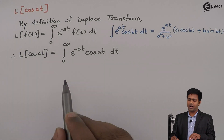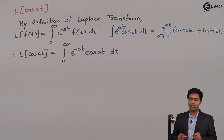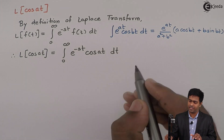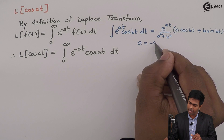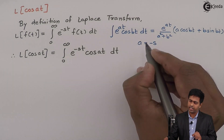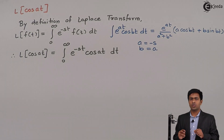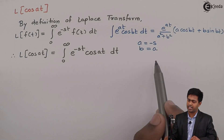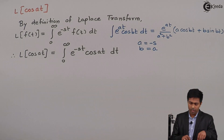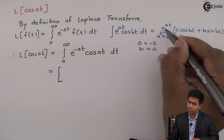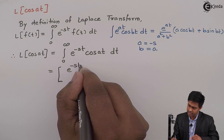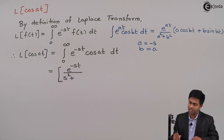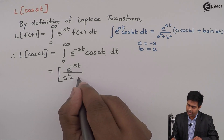Now let us compare our term with the formula. We can see that e raised to AT corresponds to e raised to minus st, which means a equals minus s. And since cos(BT) corresponds to cos(AT), we should have b equal to a. So to get the value of e raised to minus st times cos(AT) using this formula, we substitute a as minus s and b as a in the right-hand side.